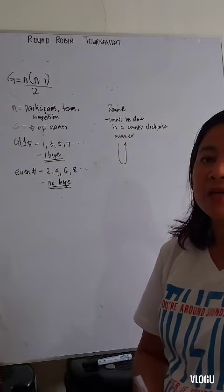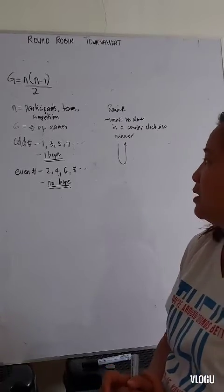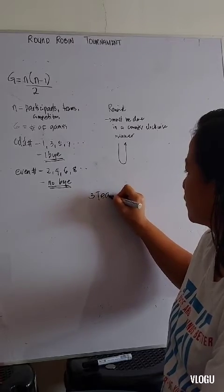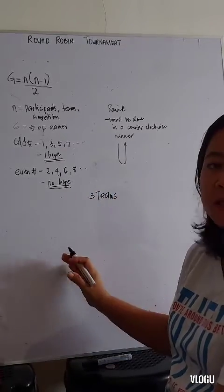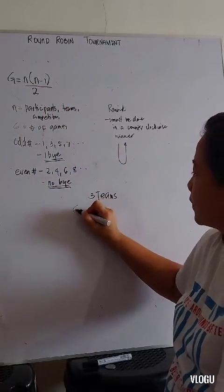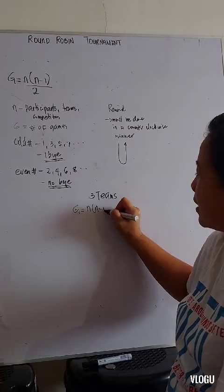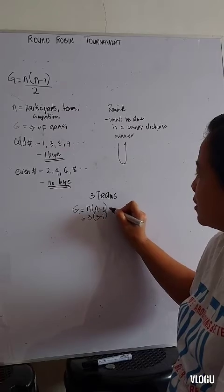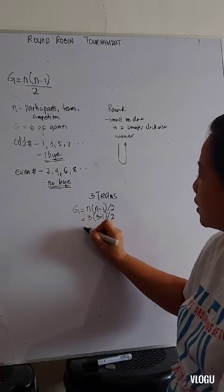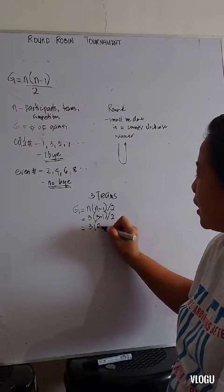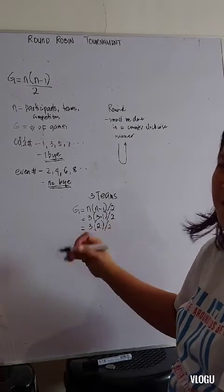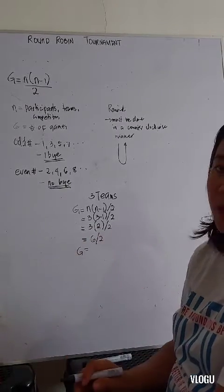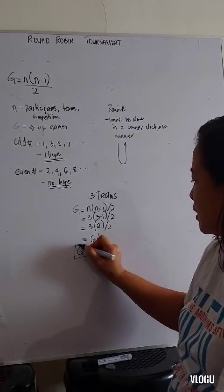Supposing we have this first example as 3 teams. In 3 teams, we have formula G equals n times n minus 1. We have 3, 3 minus 1, divide by 2. So 3 times 2 is 6, divide by 2. So 6 divided by 2, we have 3 games.